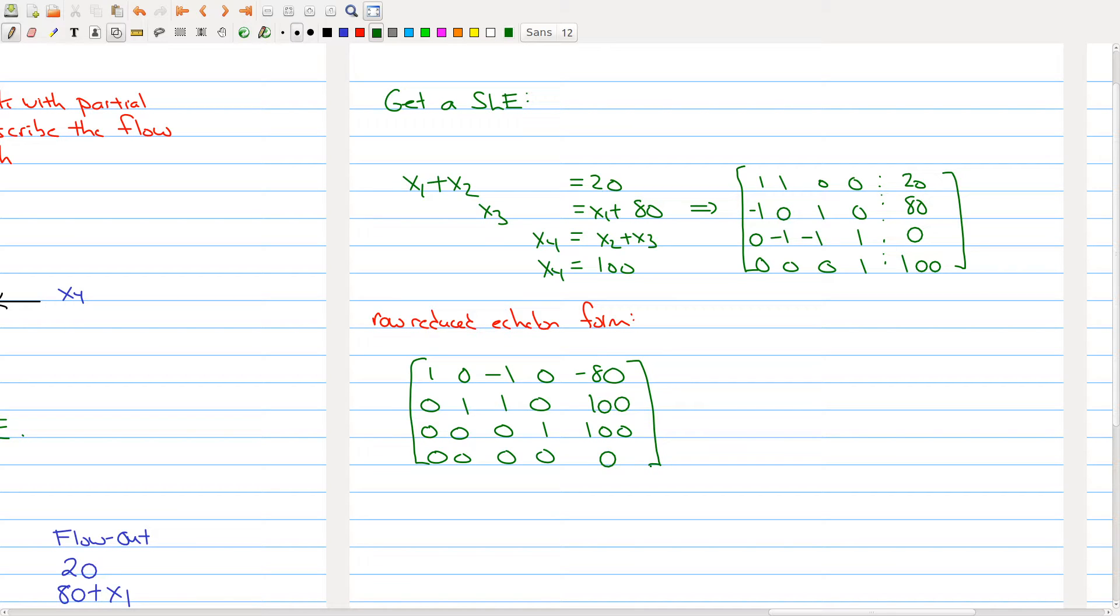We observe that we get a free variable. We get that x3 is free. We have no pivot in the last column, so we'll end up with an infinite number of solutions. Here is the parametric form: x1 equals negative 80 plus x3, x2 equals 100 minus x3, and x4 equals 100.